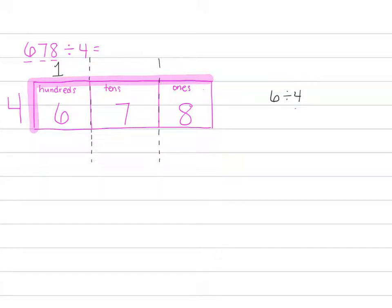1, let's check ourselves. 1 times 4 is 4. Hopefully you wrote that down even before I did. 1 times 4 is 4. So when we put 100 in each group, we had used 4 hundreds.